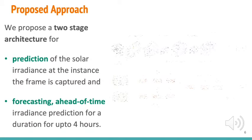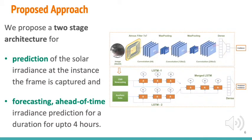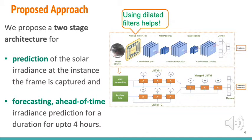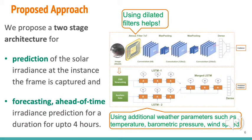We propose a two-stage architecture. We directly regress the radiance value from the image using atrous filters. For forecasting, we find a significant improvement in accuracy when additional weather parameters such as temperature, barometric pressure, and wind speed are jointly modeled with the solar irradiance prediction.